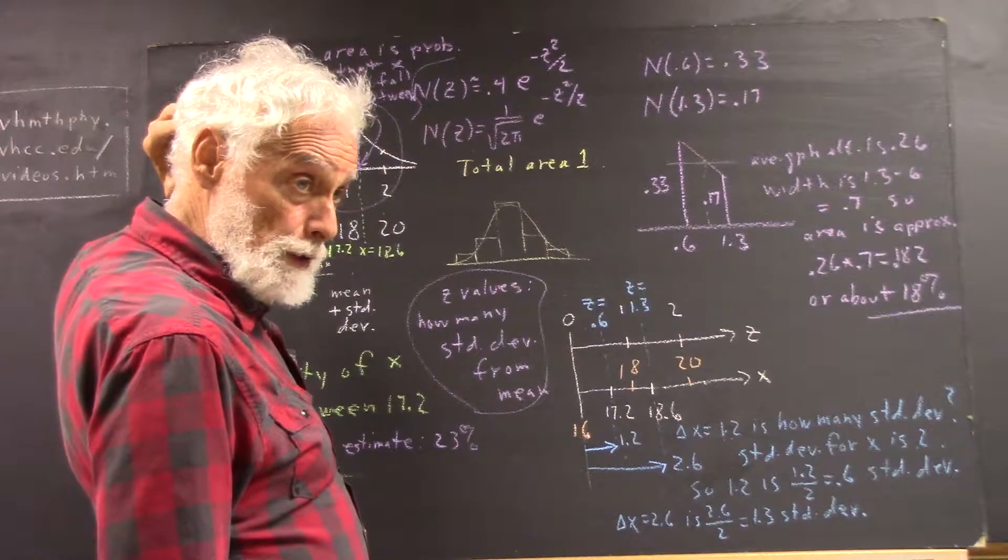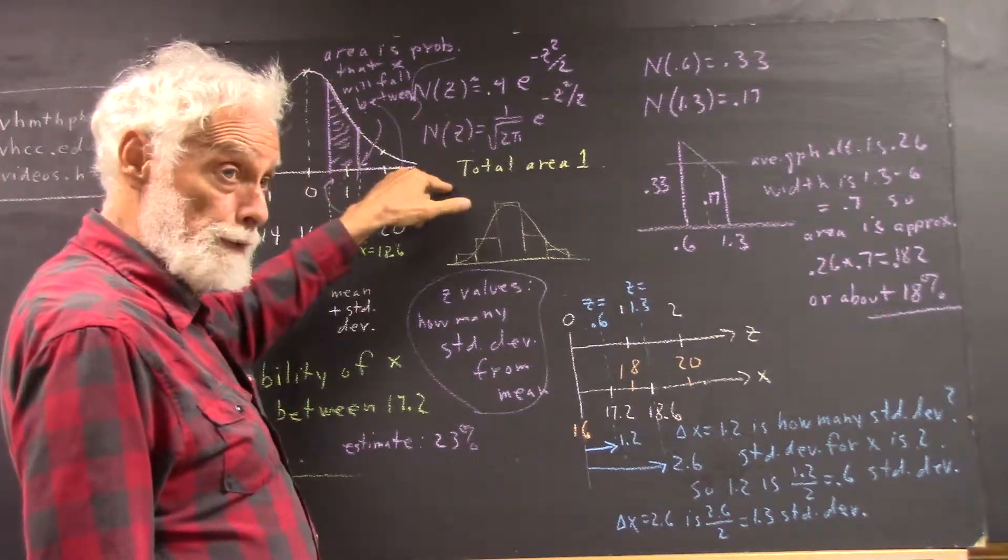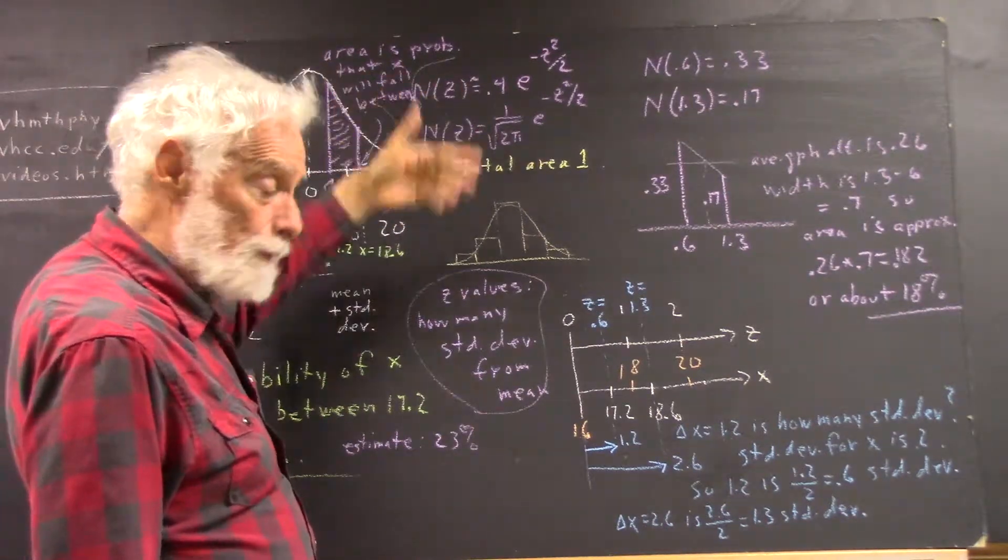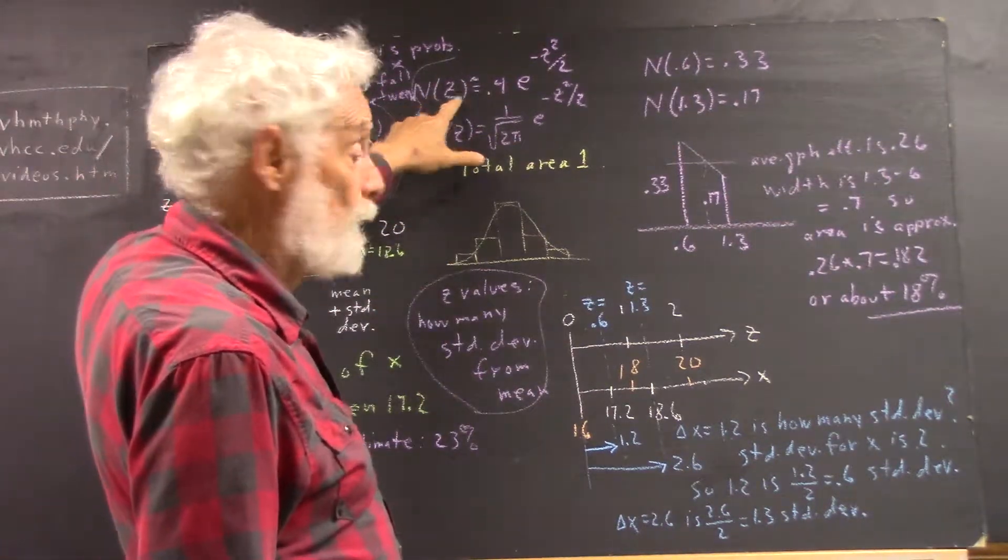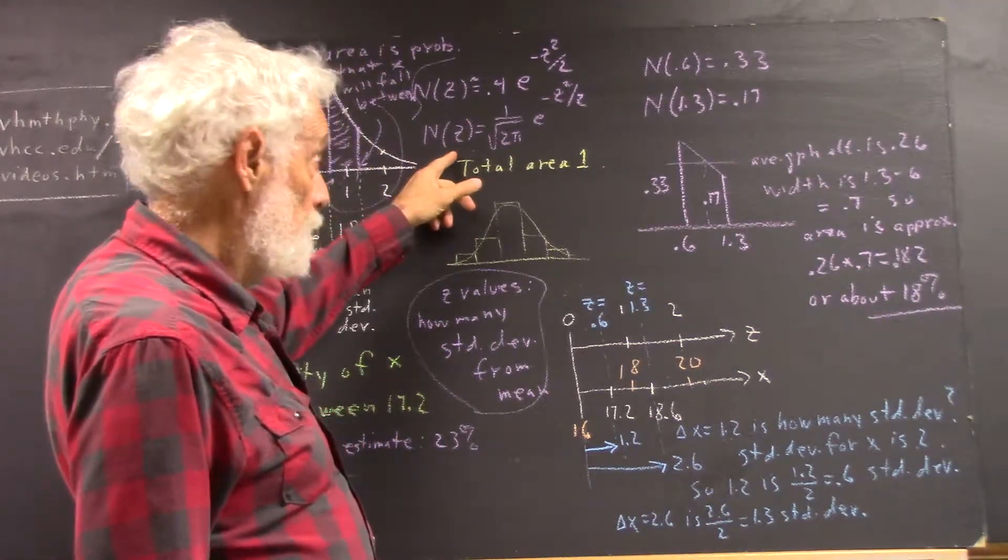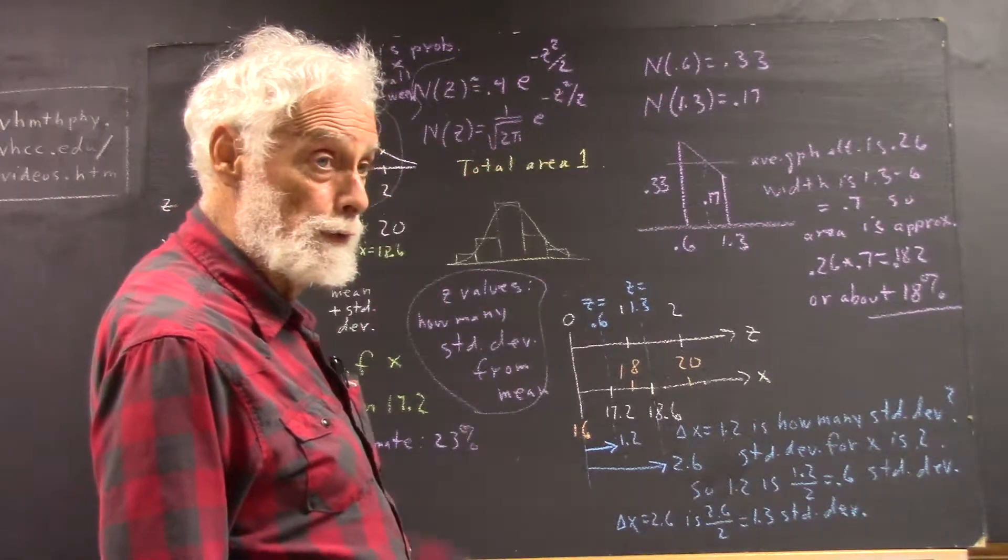I just wrote out the equations for the N of z function, and this is just a graph of the N of z function. N of z is the normal function, standard normal function of z. The rigorous definition is it's 1 over the square root of 2 pi e to the negative z squared over 2.